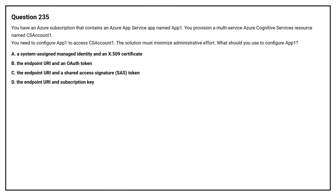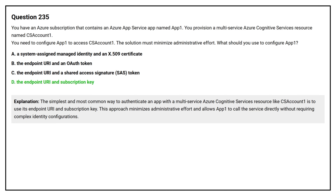Option B: the endpoint URI and an OAuth token. Option C: the endpoint URI and a shared access signature (SAS) token. Option D: the endpoint URI and subscription key. The correct answer is option D, the endpoint URI and subscription key. The simplest and most common way to authenticate an app with a multi-service Azure Cognitive Services resource like CS Account 1 is to use its endpoint URI and subscription key. This approach minimizes administrative effort and allows App1 to call the service directly without requiring complex identity configurations.